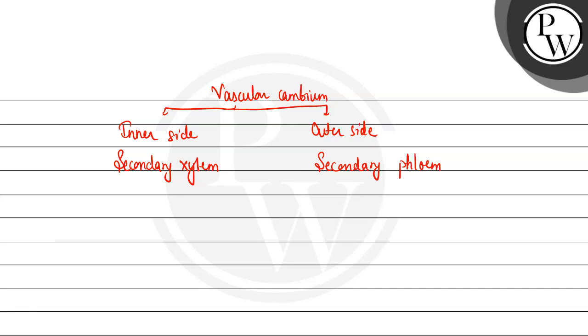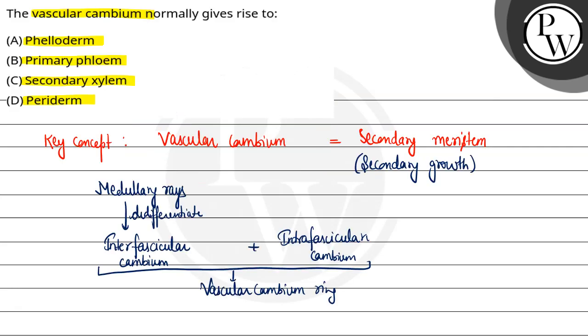Yani secondary vascular tissues ki formation karta hai vascular cambium. So ab question mein humein poocha hai, the vascular cambium normally gives rise to first option hai phelloderm. Phelloderm periderm ka part hai jo ki banta hai through cork cambium.